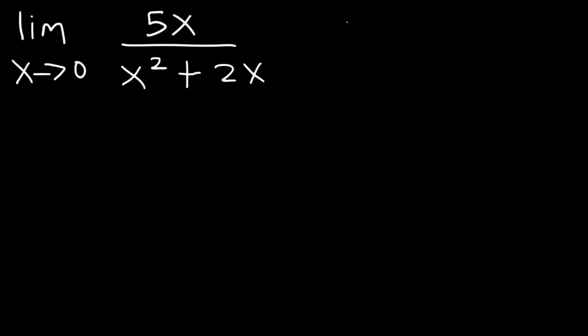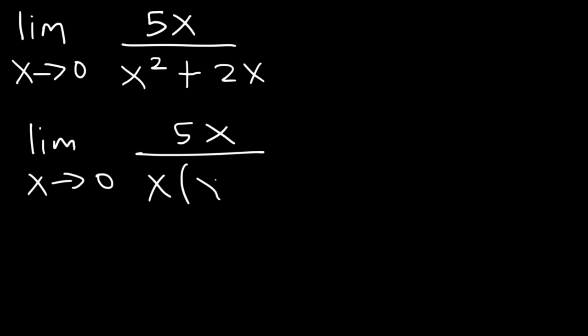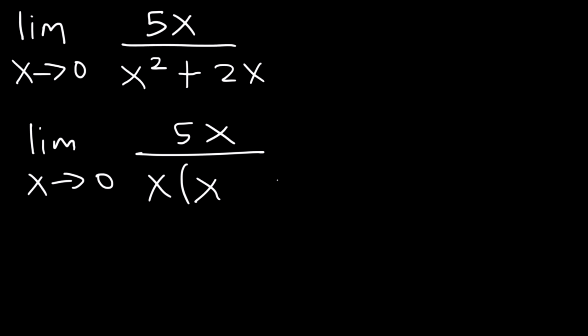There's nothing to factor in the numerator, so we won't change it. But in the denominator we can take out the GCF, the greatest common factor. If we take out an x, x squared divided by x is x, and 2x divided by x is positive 2. Notice that we can cancel an x variable.